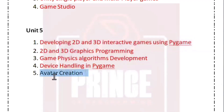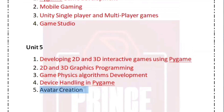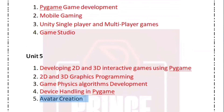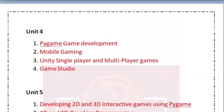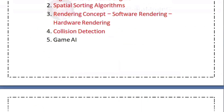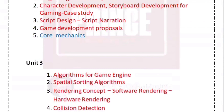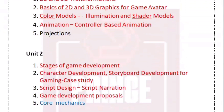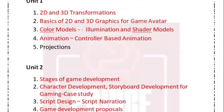You can go to the Avatar Creation question and find the units. You can attend the game development subject. If you highlight the four questions in each unit in red color, you can pass the four questions in each unit and pass the subject easily.